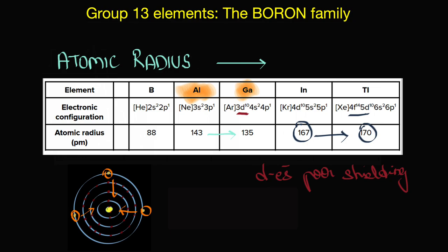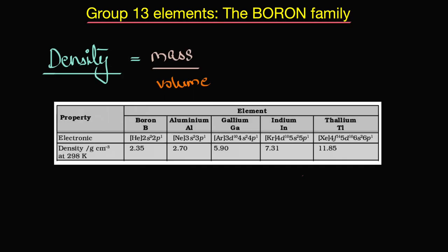If we extend the effect of atomic radius variation, we see something similar with density as well. Density is atomic mass divided by volume. In general, density increases down the group because atomic mass increases with more protons and neutrons. But looking at the table, there is a much sharper increase in density from aluminium to gallium, and similarly from indium to thallium.